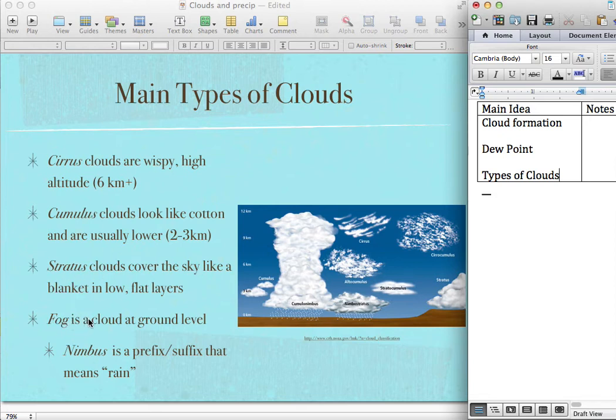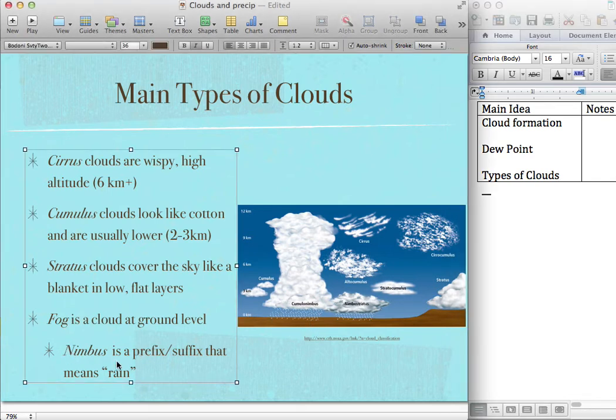Fog is just a cloud at ground level. So when it's fog, you're just in a cloud. And then finally, nimbus is a prefix or suffix that we can put on a cloud that means rain.